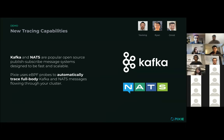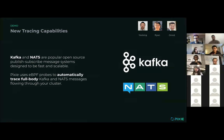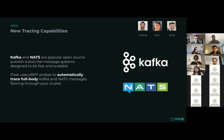Both of these protocols are essentially message bus systems, so you can post messages in a pub-sub kind of way, and then you have consumers which can read the messages off. These two protocols work the same way that we trace all other protocols inside Pixie — this is part of our eBPF-based approach. You don't have to instrument anything, you don't have to change any lines of code, you don't even need to redeploy anything. We just automatically use eBPF to snoop all the traffic, detect whether it's Kafka or NATS, and when we detect that, we automatically start tracing it and surface it up through the Pixie platform.